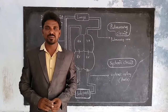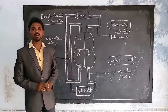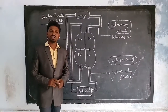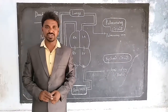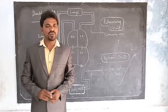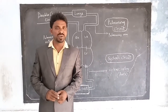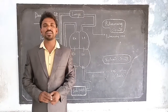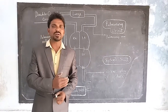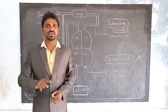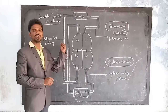Hello, good afternoon everybody. Let's discuss double circuit circulation. What is meant by double circuit circulation? It means that the flow of blood through the heart two times or twice for completing a circulation. The blood is moving through the heart two times for completing a circulation. This is called double circuit circulation.